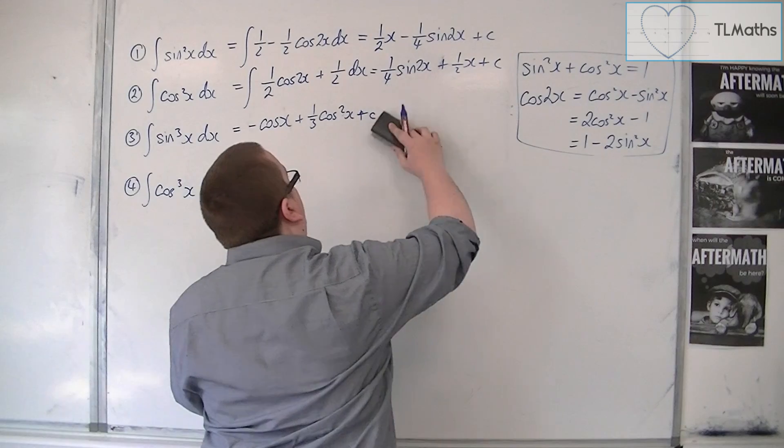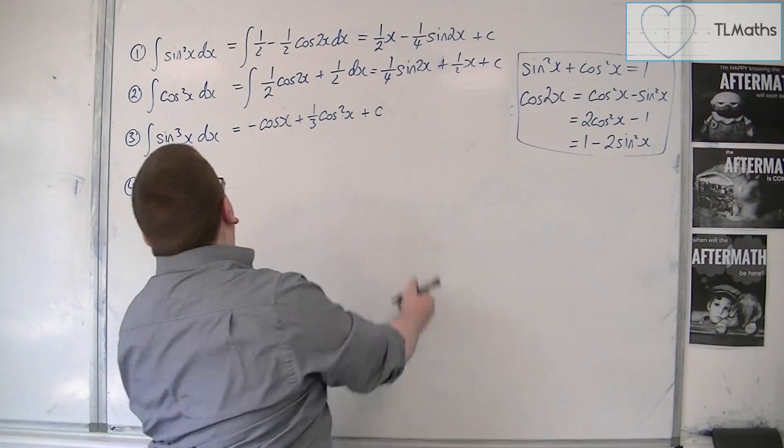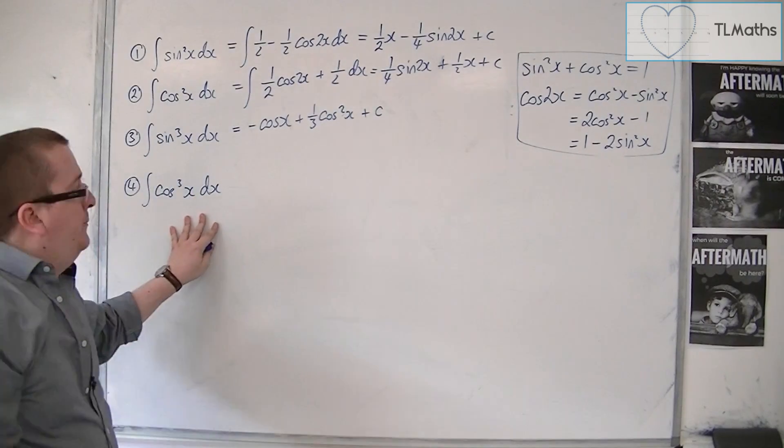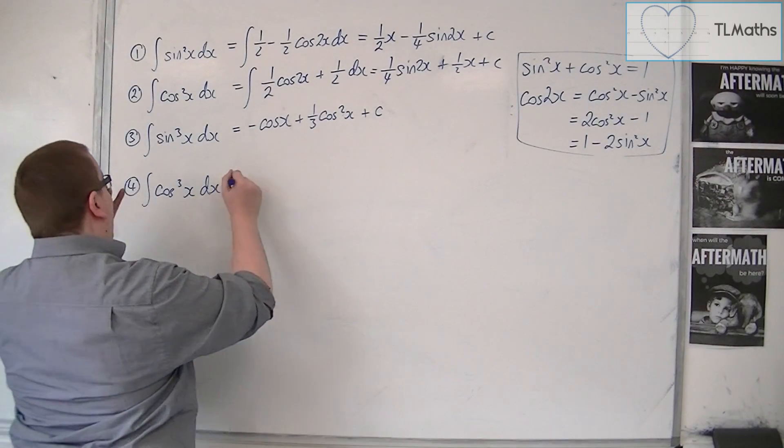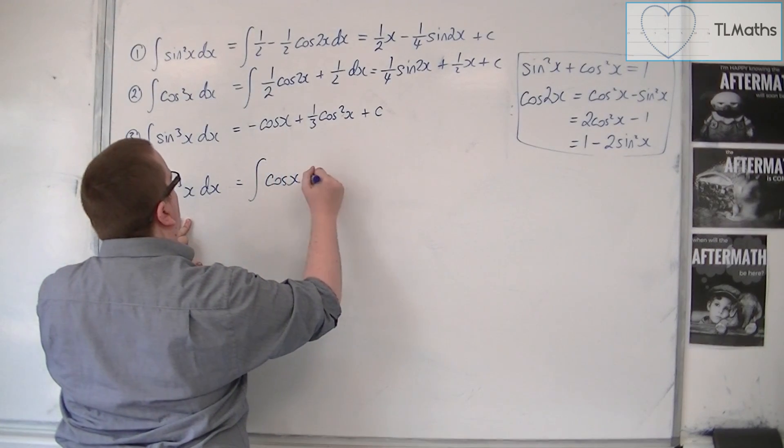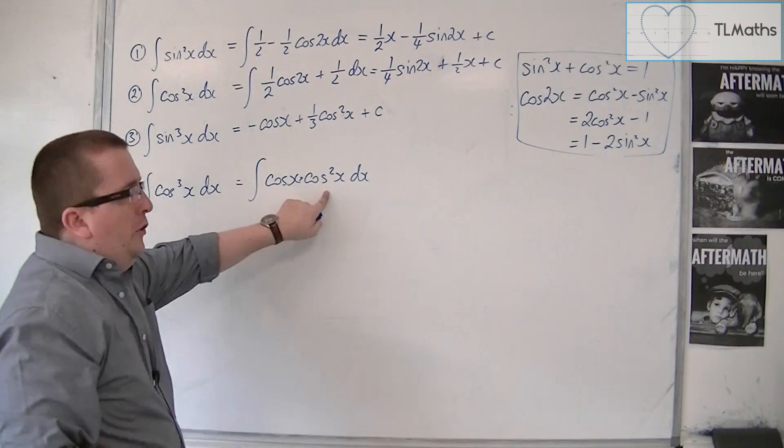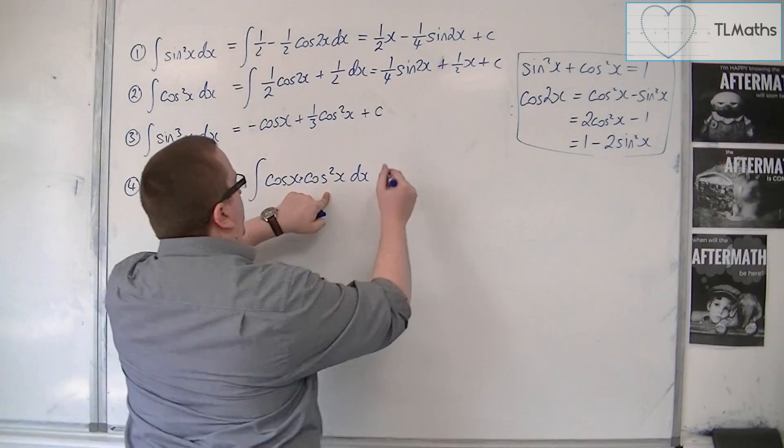Now, we're going to use a very, very, very similar method for the integral of cos cubed x. So we're going to split it up. So we've got cosx times cos squared x. The cos squared I can replace with one minus sin squared.